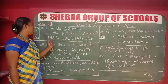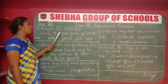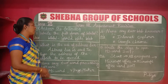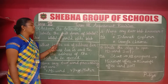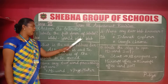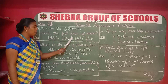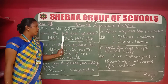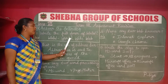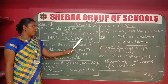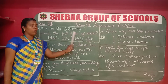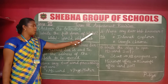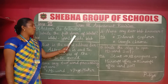Now answer the following. Number one: write the full form of WWW. WWW stands for World Wide Web — W for World, W for Wide, W for Web. World Wide Web is the largest collection of websites on the internet.